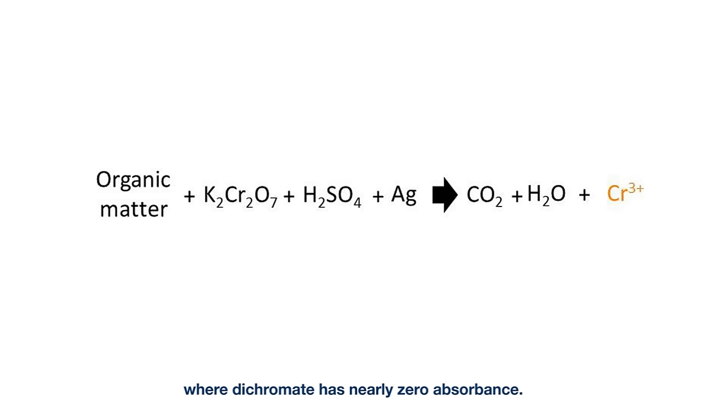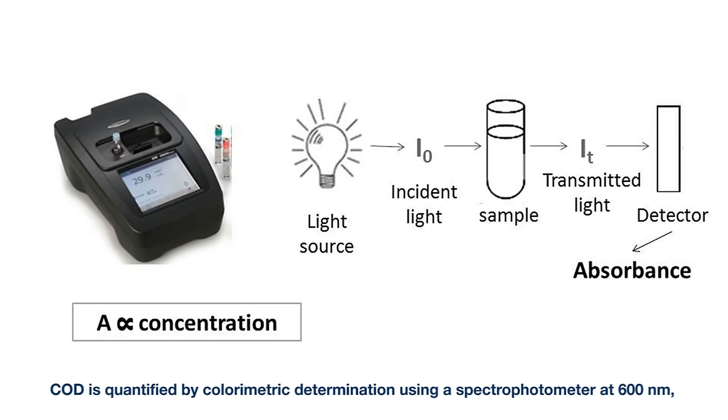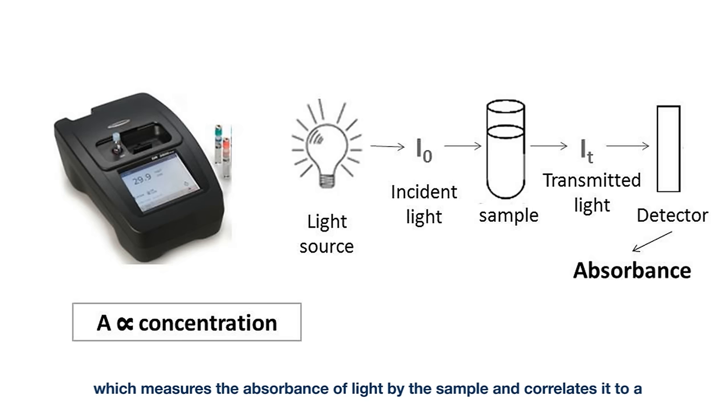COD is quantified by colorimetric determination using a spectrophotometer at 600 nanometers, which measures the absorbance of light by the sample and correlates it to a COD concentration value.